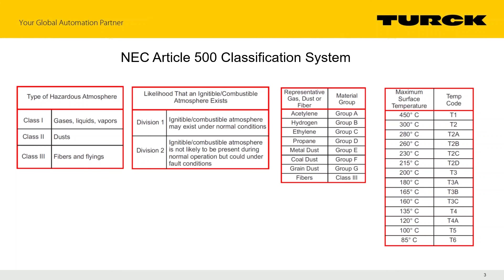Devices have a temperature code — a 'temp code' — which represents the hottest point on the device under the approval's analysis conditions. It's different for intrinsic safety versus explosion-proof. Basically it's the hottest temperature at any place where the hazardous medium can contact the device. On an explosion-proof enclosure it's generally the outside; on an intrinsic safety device it might be the inside since gases aren't necessarily kept out.